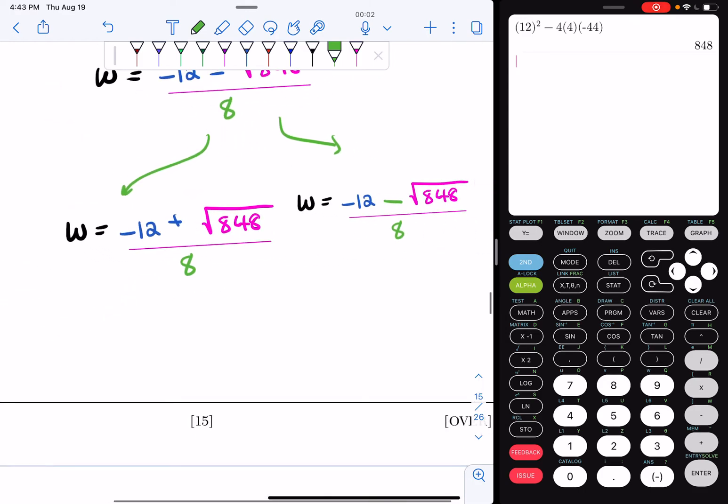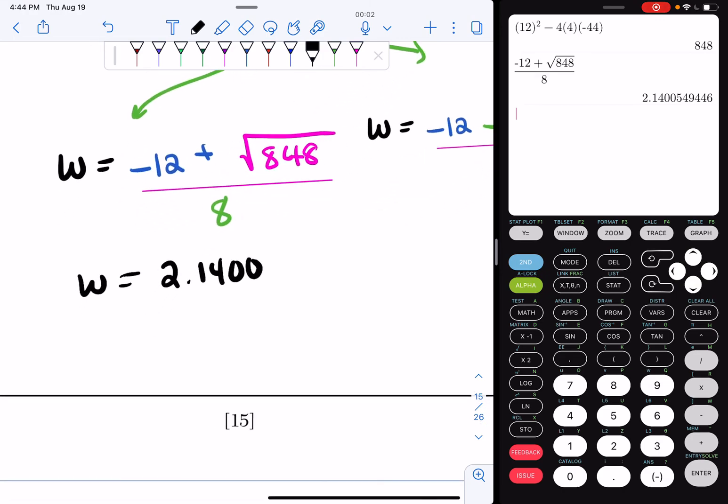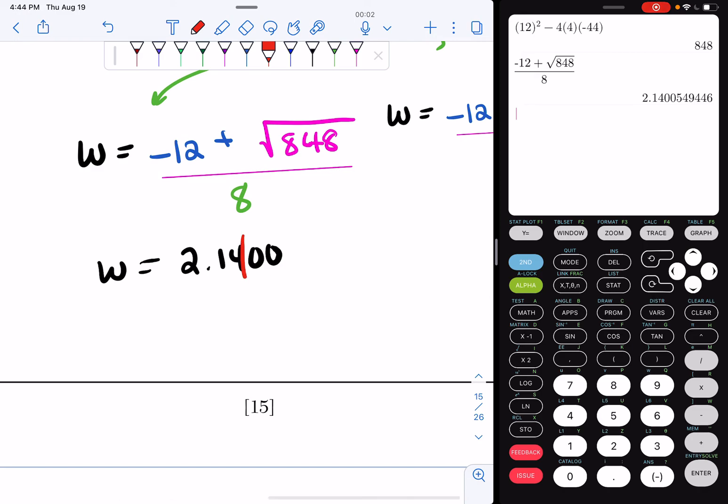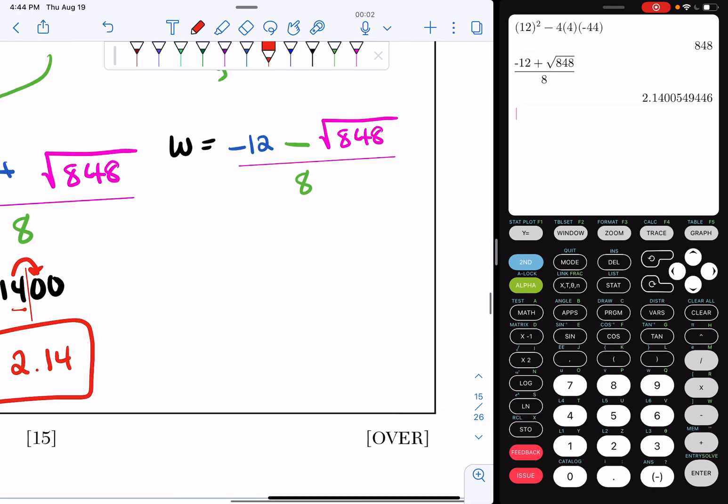So now we're simply going to type this into our calculator. So I'm going to do alpha y equal enter. I have negative 12 plus the square root of 848 all over 8 and I'm going to hit enter. And that's going to give me w equals 2.1400. I want to round to the nearest hundredth. So I want to stop right here. If I look to the right, I have a zero. So I'm going to keep this as w equals 2.14. That's one of my answers.